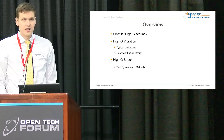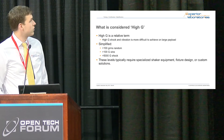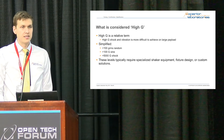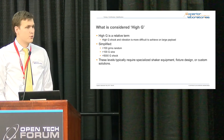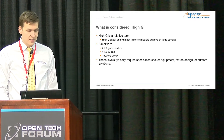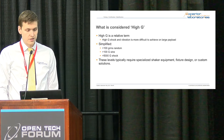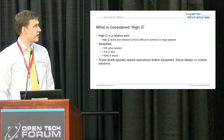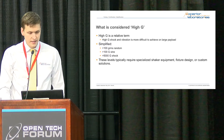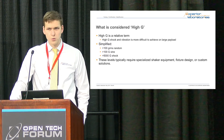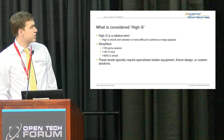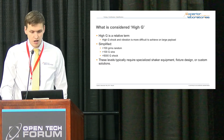High G is kind of a relative term. It's relative because it's harder to achieve high G levels on larger payloads. For a medium payload and up — around 25 pounds and up — these are some general guidelines for what we would consider high G: 100 G RMS random, 100 G sine, or 5,000 G shock.